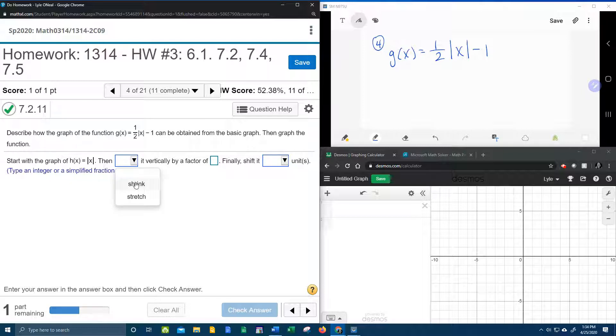So here your options are stretch or shrink. The one-half, if it's a fraction like a half or a third or a sixth, that's going to take your V of your absolute value and widen it out. So vertically that's going to compress it, which we would call that a shrink. It's going to vertically shrink it down by a factor of, and that's the coefficient.